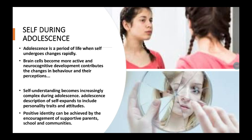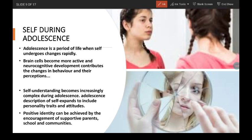Self during adolescence — this belongs to you because you are all in your adolescent age. Adolescence is a period of life when self undergoes rapid change. Brain cells become more active and neurocognitive development contributes to changes in behavior and perception. Self-understanding becomes increasingly complex during adolescence, and self-description expands to include personal traits and attitudes. A positive identity can be achieved through encouragement from supportive parents, school, and communities.